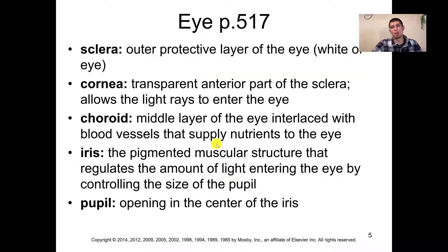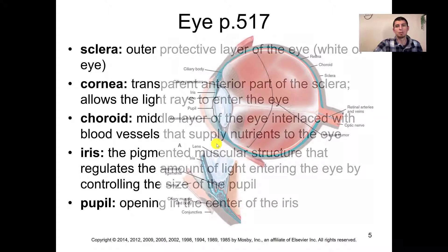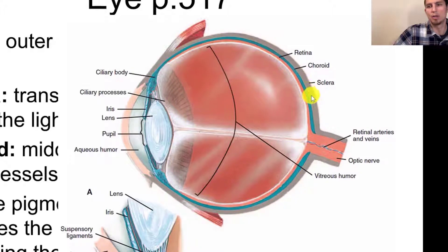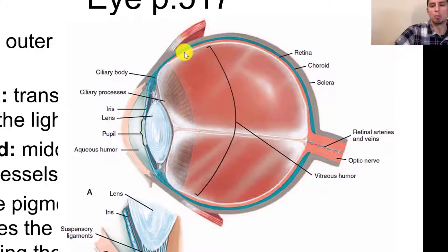The choroid is the middle layer of the eye that has the blood vessels and supplies nutrients to it. Here you can see underneath the sclera you have the choroid, shown in blue. That's what is actually providing the nutrients and blood to the eye so that it can function properly.